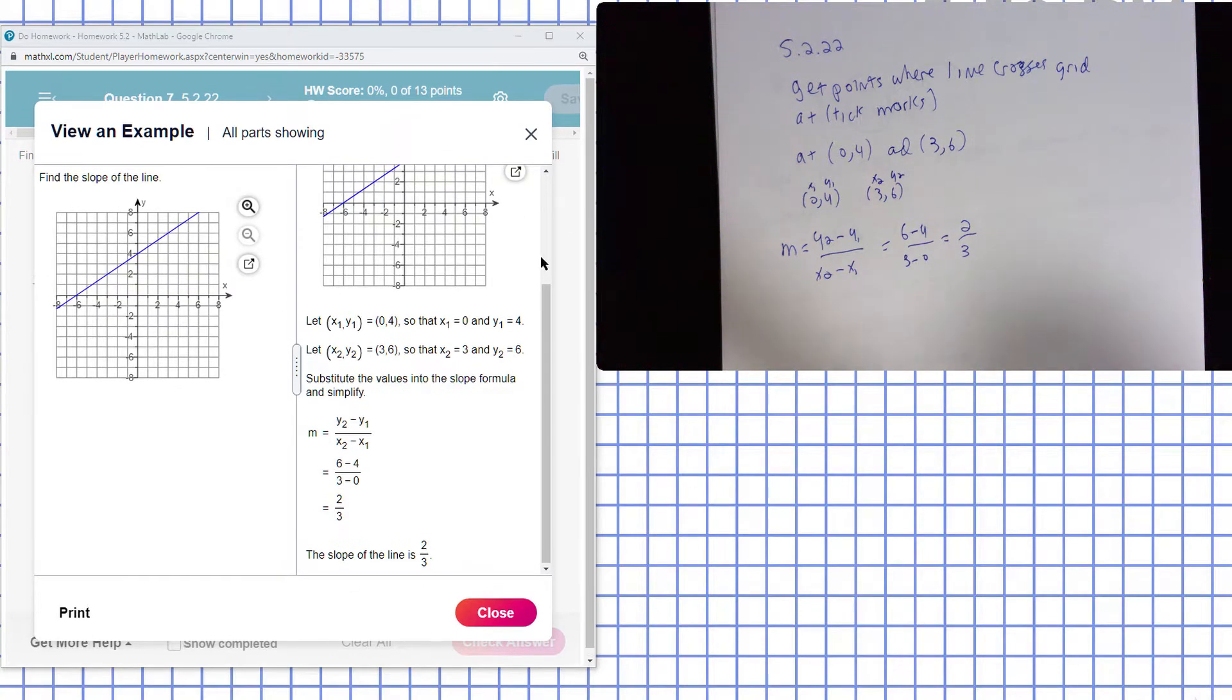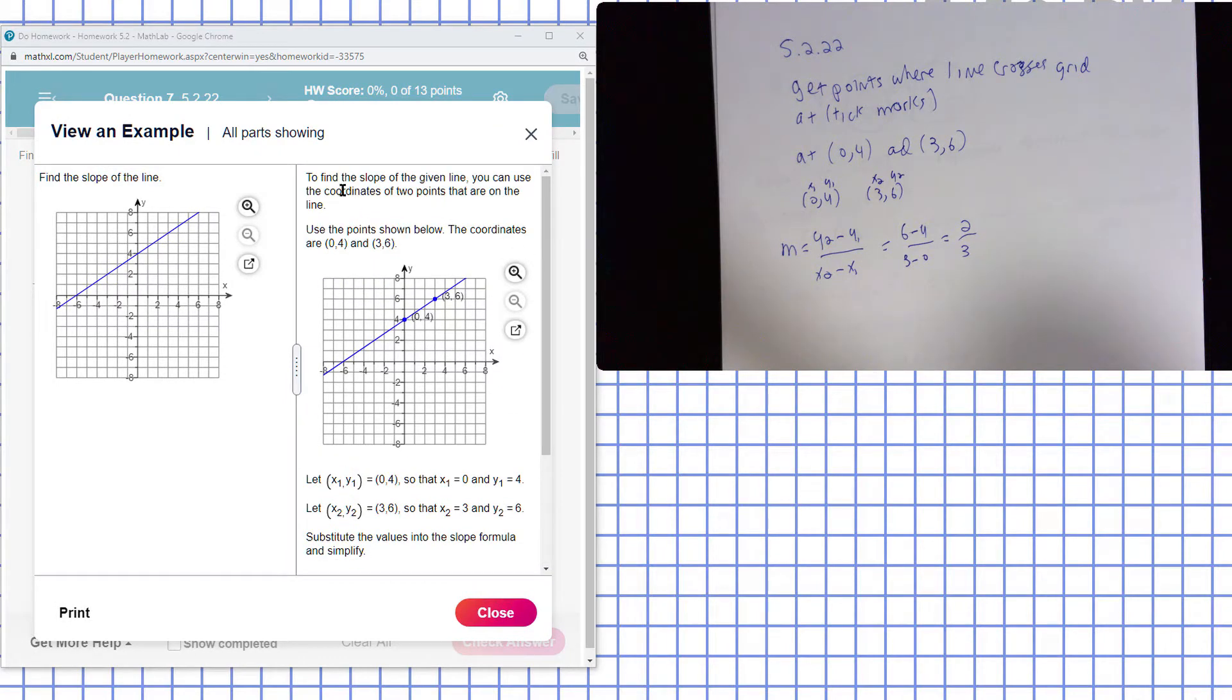Find the slope of the line. You can use the coordinates of the two points on the line. I choose two places where it crosses on the grid, on the grid marks.